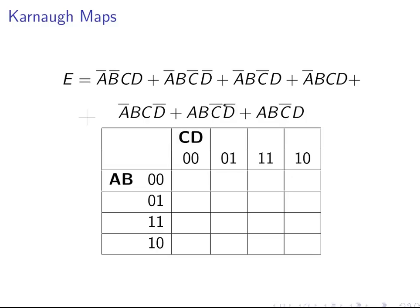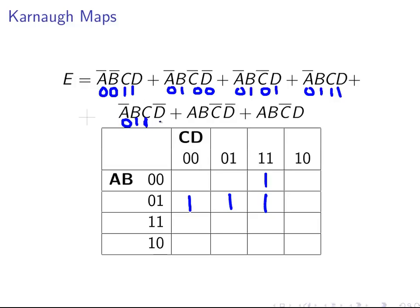So not A, not B, C and D — let's put a 0 and a 0 there and a 1 and a 1 there. Let's write in a 1 in the corresponding location. So the first term gives us: 0, 1, 0, 0 — put a 1 in there. The next: 0, 1, 0, 1 — a 1 in there. Then: 0, 1, 1, 1 — a 1 in there. Then: 0, 1, 1, 0 — a 1 in there.